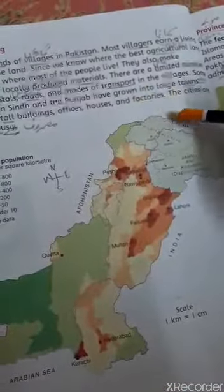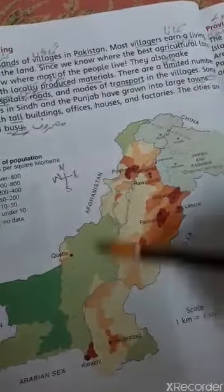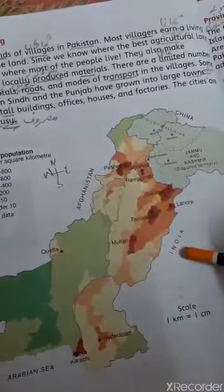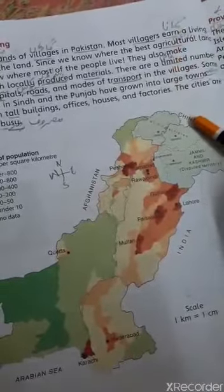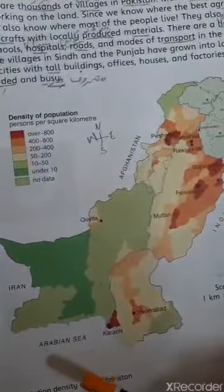Theek hai. In the East is India. Jo hamare paas yeh hai, India hai. Theek hai. Aur jo hamare paas North mein hai to woh hamare paas hai China. To yeh boundaries hain, borders hain, neighbor countries ki with Pakistan ke saath. This one is Afghanistan. This one is India. Top pe jo hai hamare paas China hai. Theek hai. West mein Iran hai. Aur South mein Arabian Sea hai.